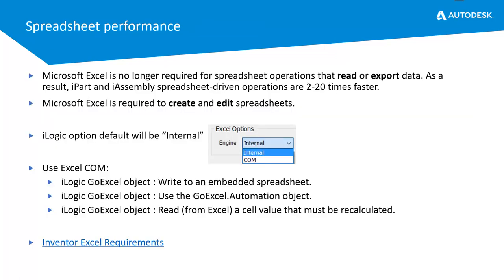Spreadsheet performance: Microsoft Excel is no longer needed for spreadsheet operations that read or export data. As a result, iPart and iAssembly spreadsheet-driven operations are 2 to 20 times faster, but remember that Microsoft Excel is still required if you want to create or edit spreadsheets. This also helps with iLogic — the default option is now set to internal, but can be changed back to COM for things like writing to an embedded spreadsheet or reading from an Excel cell.